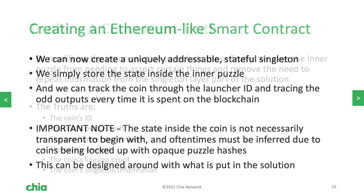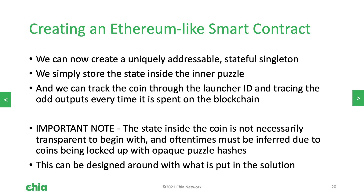We can now create a uniquely addressable stateful singleton. To store state, we just put it inside the inner puzzle and track the coin through the launcher ID, tracing the odd output every time. However, the state inside the coin is not necessarily transparent. Given that you lock a coin up with a puzzle hash, if you don't know the pre-image to that hash you don't know what the state is — but we can design around this.